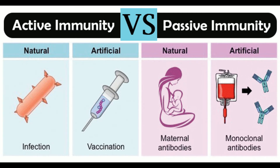Difference 14 — Booster effects: In active immunity, subsequent doses with antigens cause booster effects, whereas in passive immunity, subsequent doses are less effective due to immune elimination. Difference 15 — Suitability: Active immunity is not suitable for the protection of immunocompromised or immunodeficient individuals. Passive immunity is useful in cases of immunocompromised, immunodeficient, or severe combined immunodeficiency.